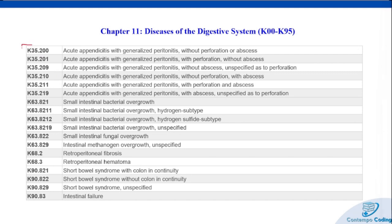We added a pretty good amount of digestive system codes this year. Acute appendicitis with generalized peritonitis added some codes for with or without abscess and in regards to the perforation. Then we have the small intestinal bacterial overgrowth section — gut overgrowth conditions can lead to symptoms ranging from abdominal pain to bloating, diagnosis typically involves breath tests or intestinal samples, and treatment options include targeted antibiotics or antifungals. We also added some retroperitoneal codes — retroperitoneal fibrosis and retroperitoneal hematoma — plus new codes for short bowel syndrome with or without colon in continuity and one code for intestinal failure.